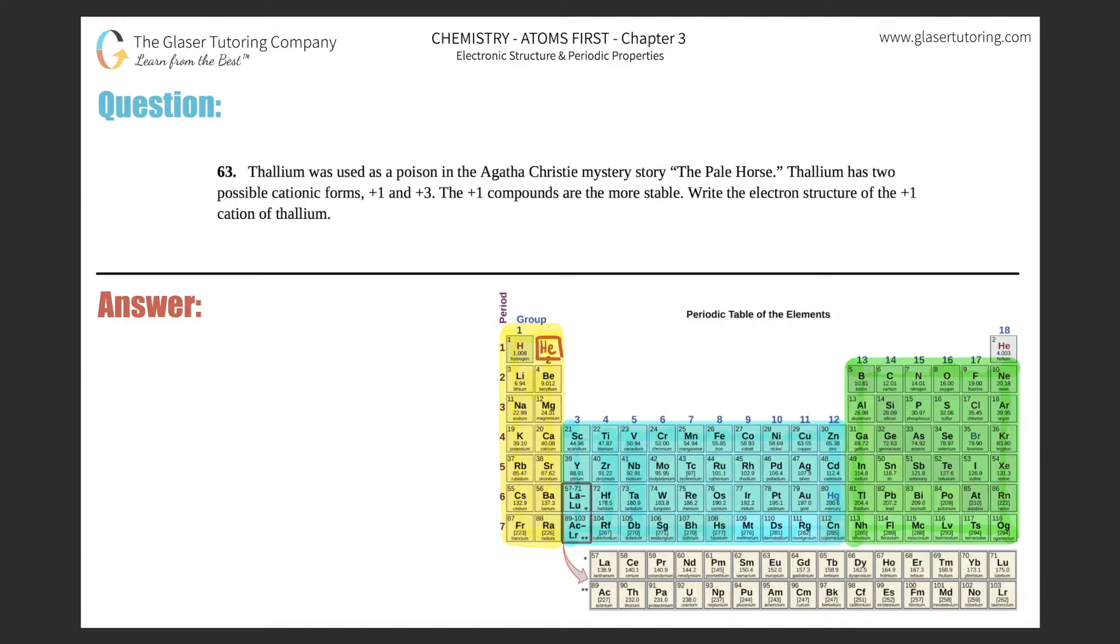Number 63. Thallium was used as a poison in the Agatha Christie mystery story 'The Pale Horse.' Thallium has two possible cationic forms, +1 and +3. The +1 compounds are the more stable. Write the electron structure of the +1 cation of thallium.